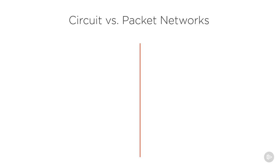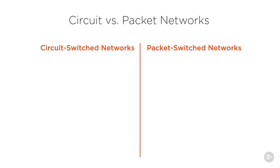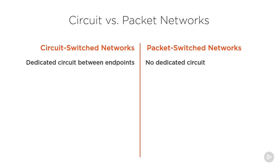Two network types are circuit switch networks and packet switch networks. Circuit switch networks have a dedicated circuit between endpoints, while packet switch networks do not have a dedicated circuit.